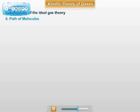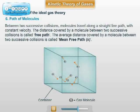Then, path of molecules. Between two successive collisions, molecules travel along a straight line path with constant velocity. The distance covered by the molecules between two successive collisions is called free path. The average distance covered by a molecule between two successive collisions is called mean free path. It is denoted by lambda. Hence, lambda equals total distance travelled upon total number of collisions. For example, if between 10 successive collisions, a molecule travels 100 centimeter distance, then the mean free path lambda is 10 centimeter.